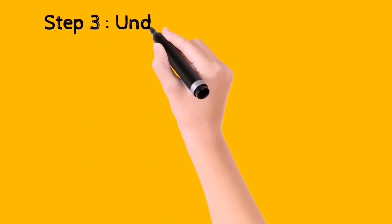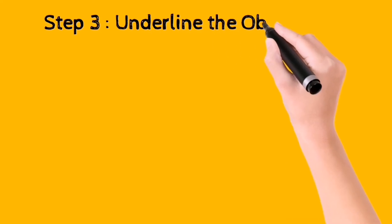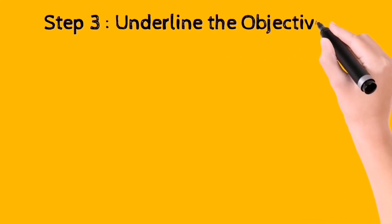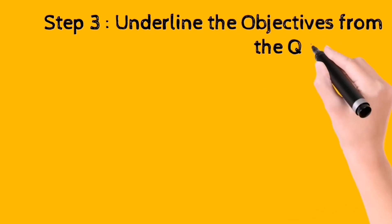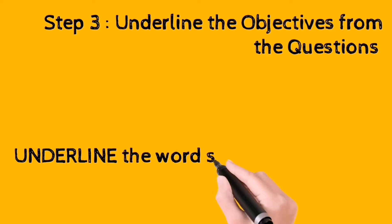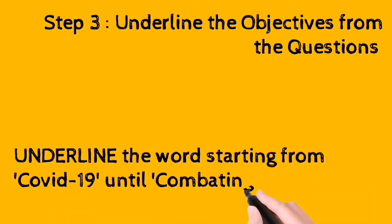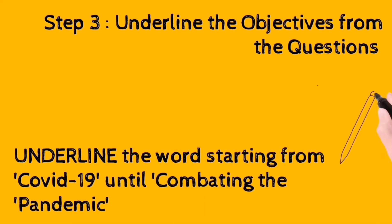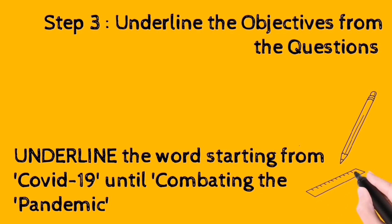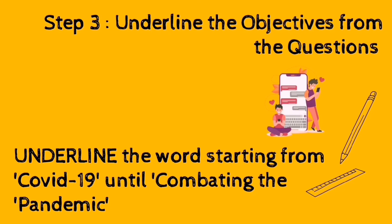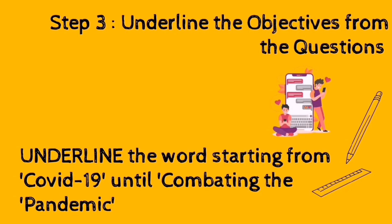We move on to step number three: please underline the objectives from the question. You need to underline starting from the word COVID-19 until 'combating the pandemic.'